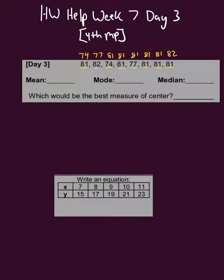Homework help week seven day three is here and the first problem we have to find the mean, mode, and median of this set of numbers which I already put in least to greatest order to save time.